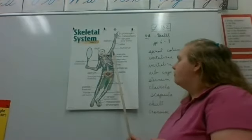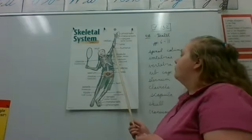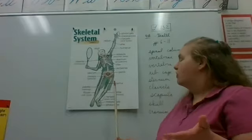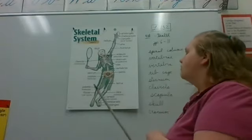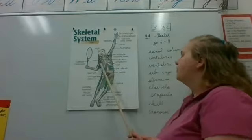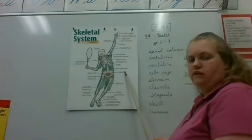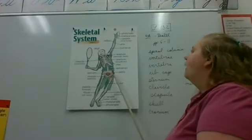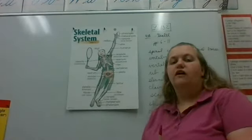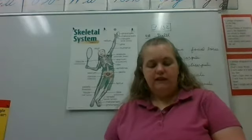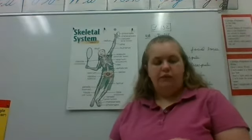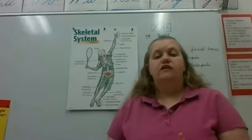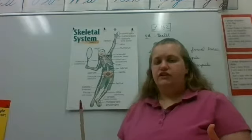We've looked at some of the many different bones that are part of our skeletal system. One of the things — the vertebra, or vertebrae — the vertebrae is comprised of 23 individual bones that work together, called the spinal column, and those make it possible for you to sit and stand and to do many other things.